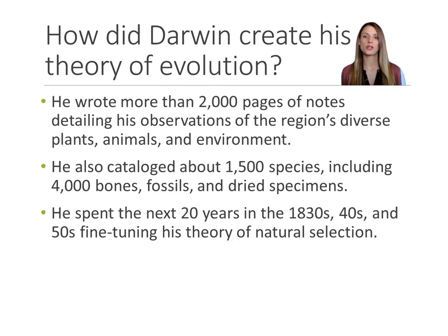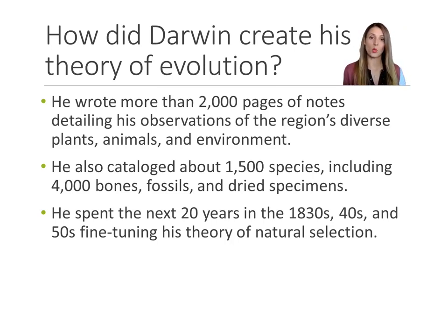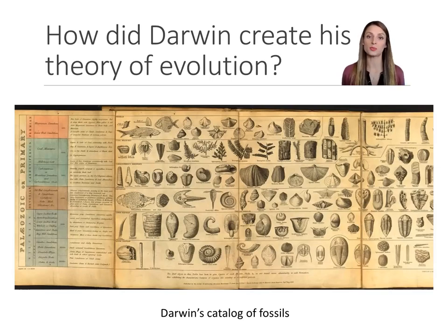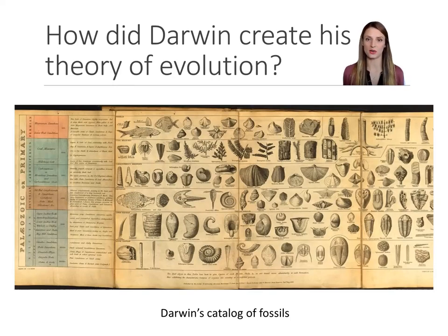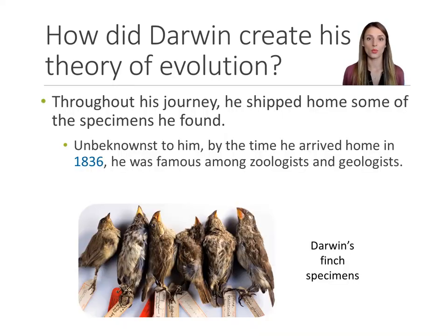He then spent the next 20 years — the 1830s, 1840s, 1850s — trying to explain what he had observed, what he had collected, what he had witnessed on his trip. In trying to catalog the species he was finding, he would draw them in notebooks. This is one of his earliest catalogs of the species he found in South America. While he was away, he sent specimens home to England for his colleagues to review.